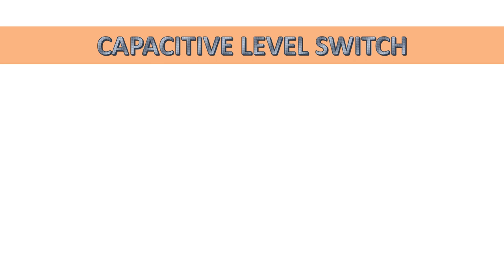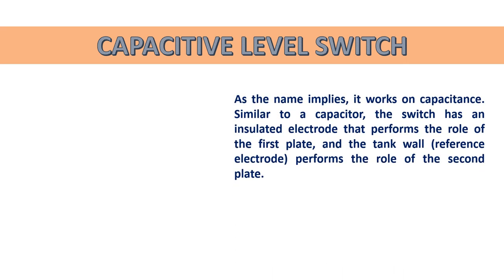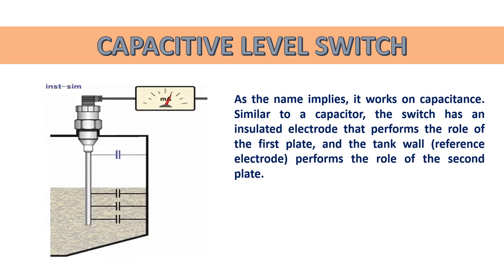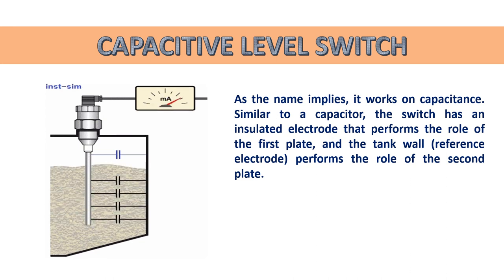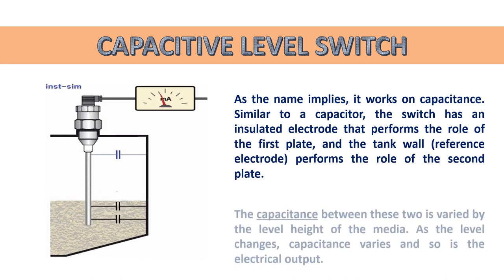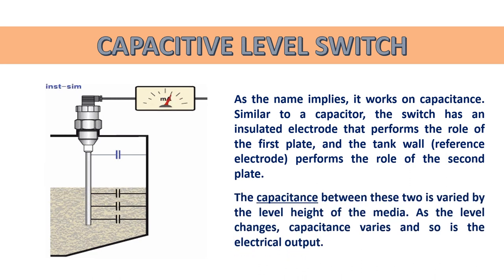Next is the capacitive level switch. Please note that for every level switch, animated graphics are shown to understand the working principle. As the name implies, the capacitance level switch works on capacitance. Similar to a capacitor, it has an insulated electrode acting as the first plate and the tank wall acting as the reference electrode, or second plate. The capacitance between these two varies with the level height of the media — as the level changes, capacitance varies and so does the electrical output.